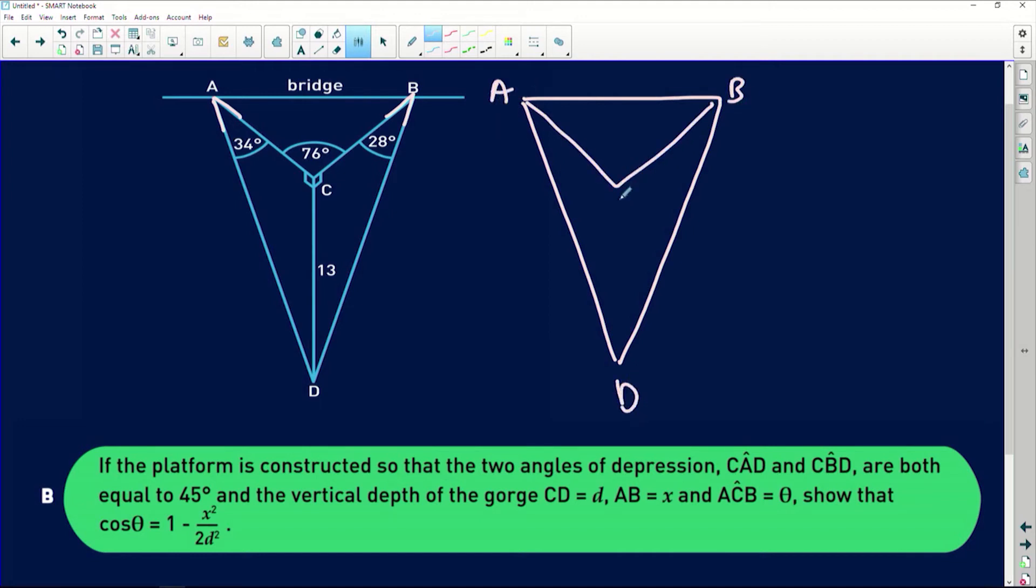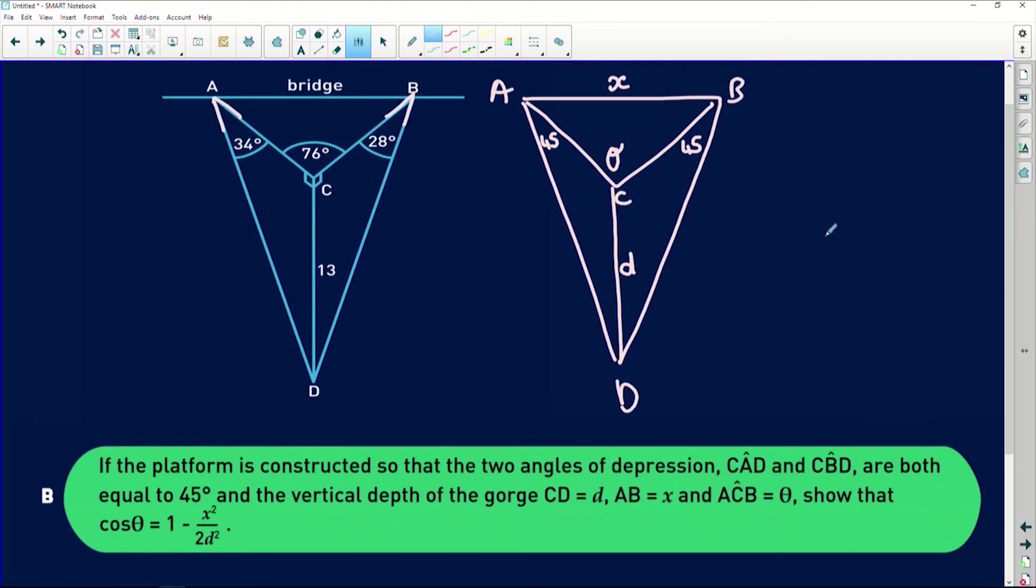So let's draw this out. They've now said that if this is 45 and that is 45, the vertical depth of the gorge is d, AB equals x, and ACB is equal to theta. Show that cos of theta is equal to 1 minus x squared over 2d squared. Okay, so immediately if I'm looking for x squared here, I'm inclined to use the cos rule because we're looking for cos in our proof.